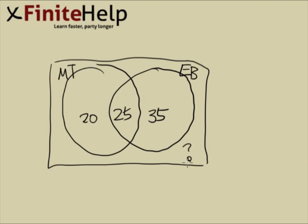Well, we know that there are 100 people that watched it, and the outside is just 100 minus these, so the answer is 100 minus 20, minus 25, minus 35, and that's going to be 20, which is your answer.